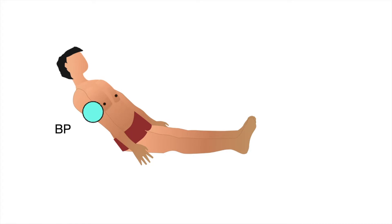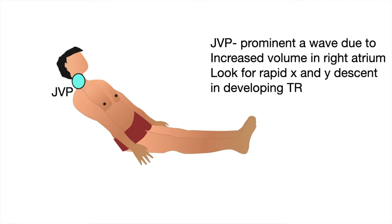For the JVP, we look for a prominent A wave due to increased volume in the right atrium due to the left-to-right shunt. We look for a rapid X and Y descent in developing tricuspid regurgitation.